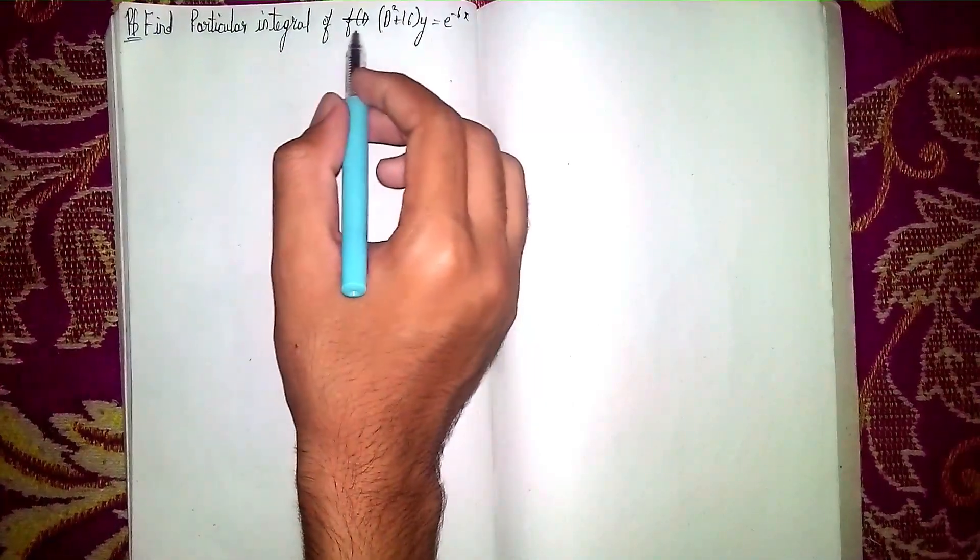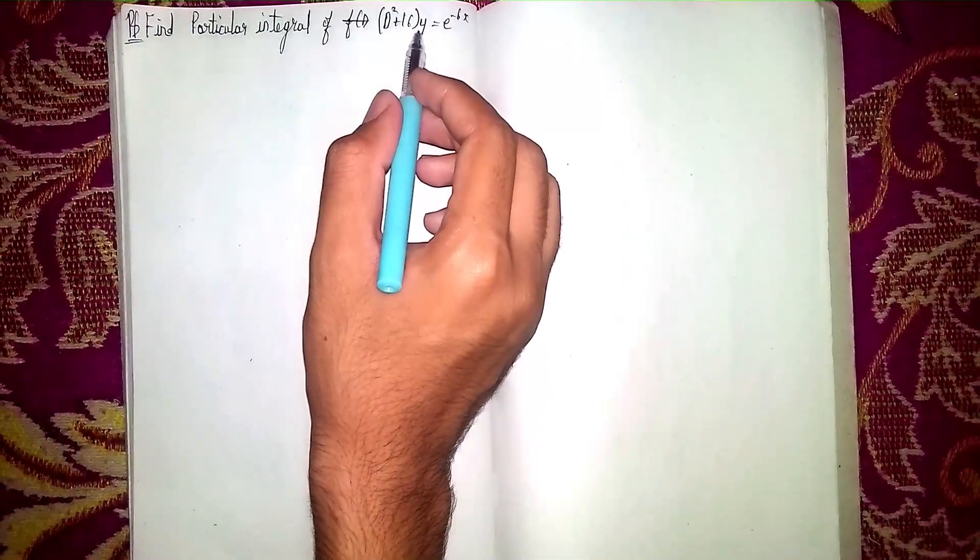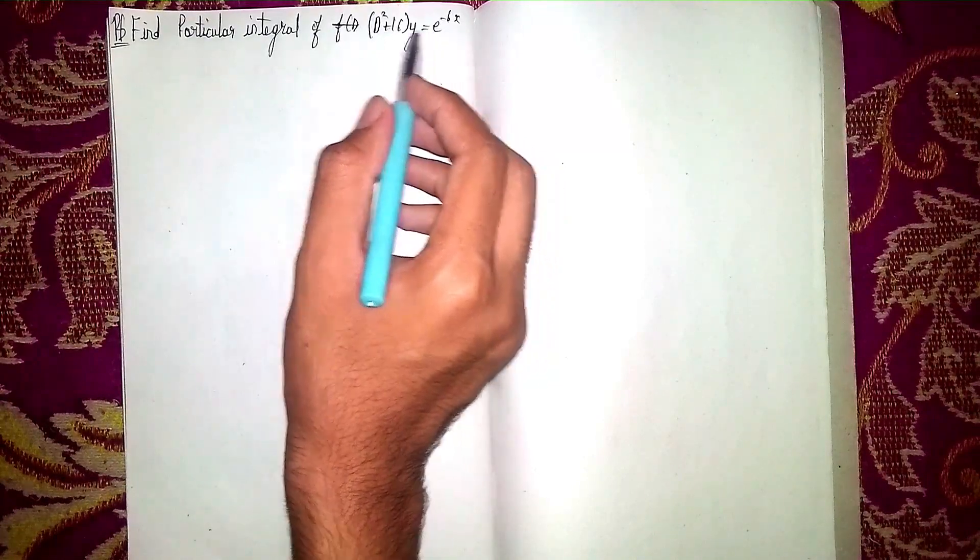Hello and welcome back to my channel. This question: find the particular integral of D² plus... y equals e^(-6x). These are non-homogeneous differential equations.